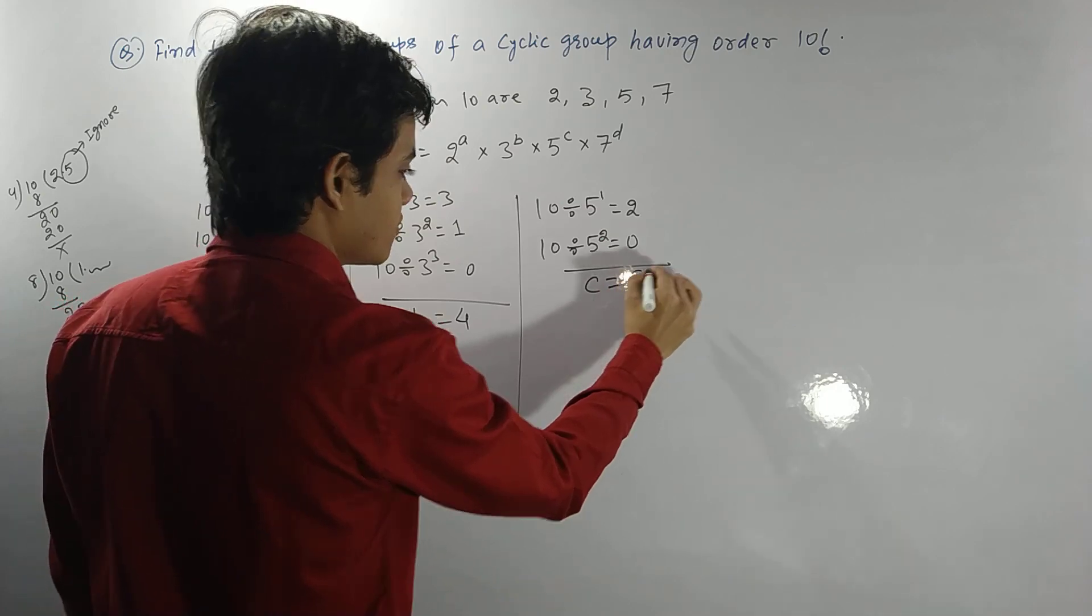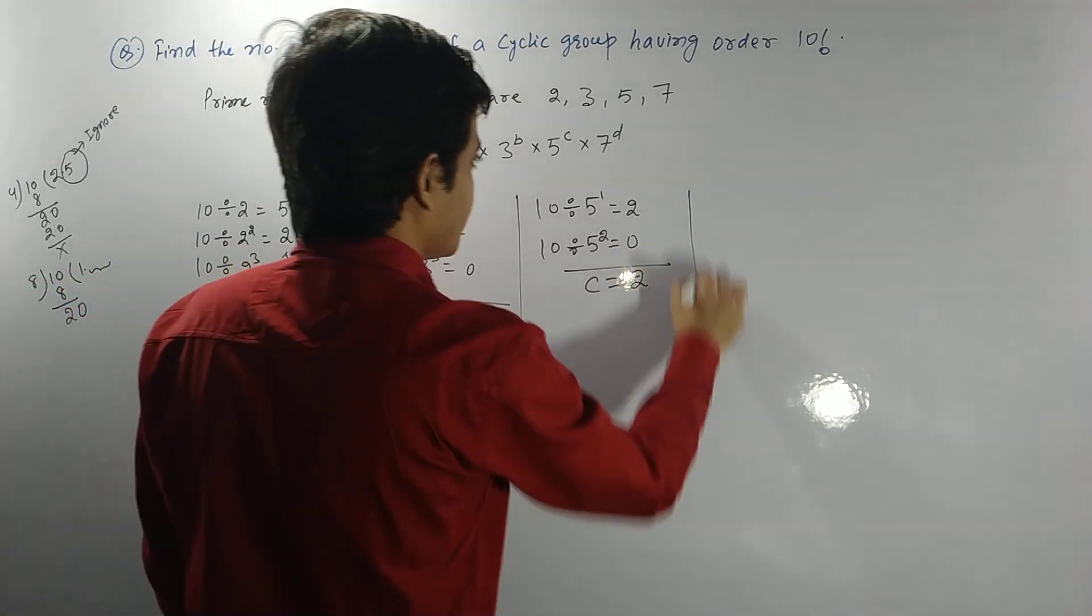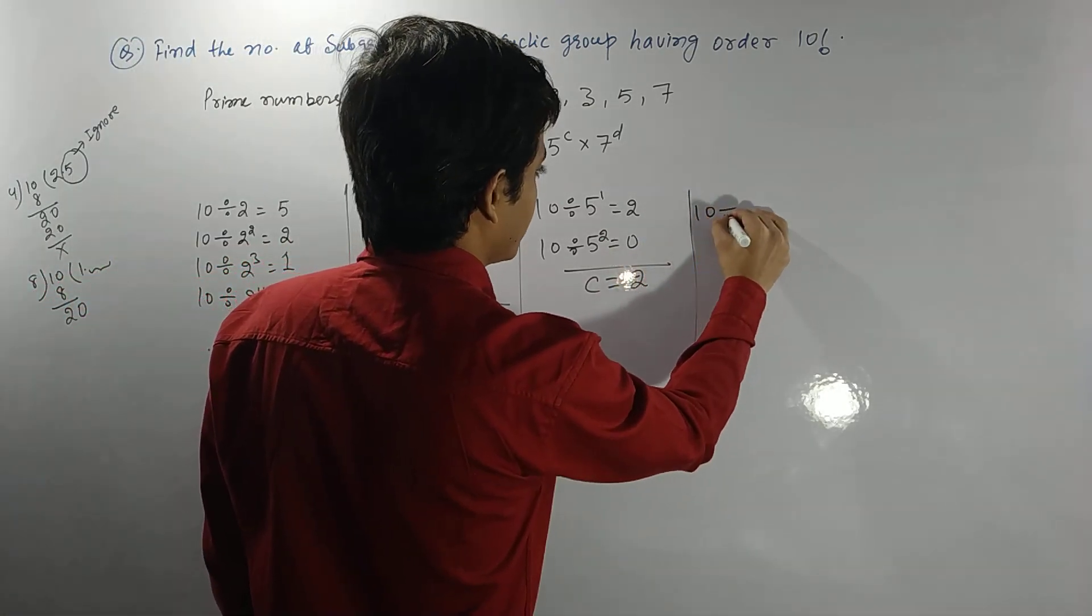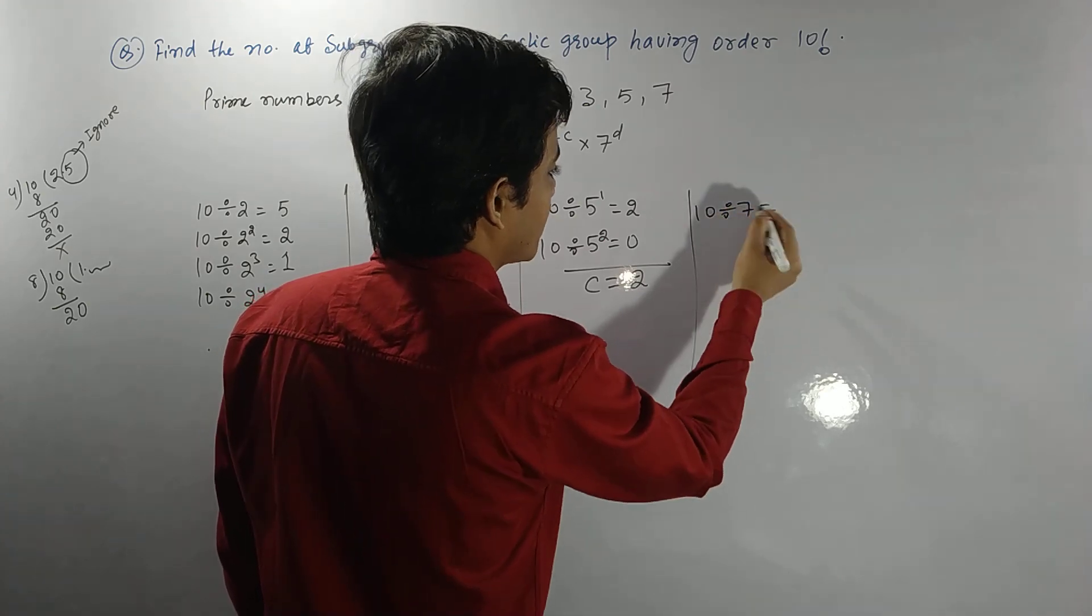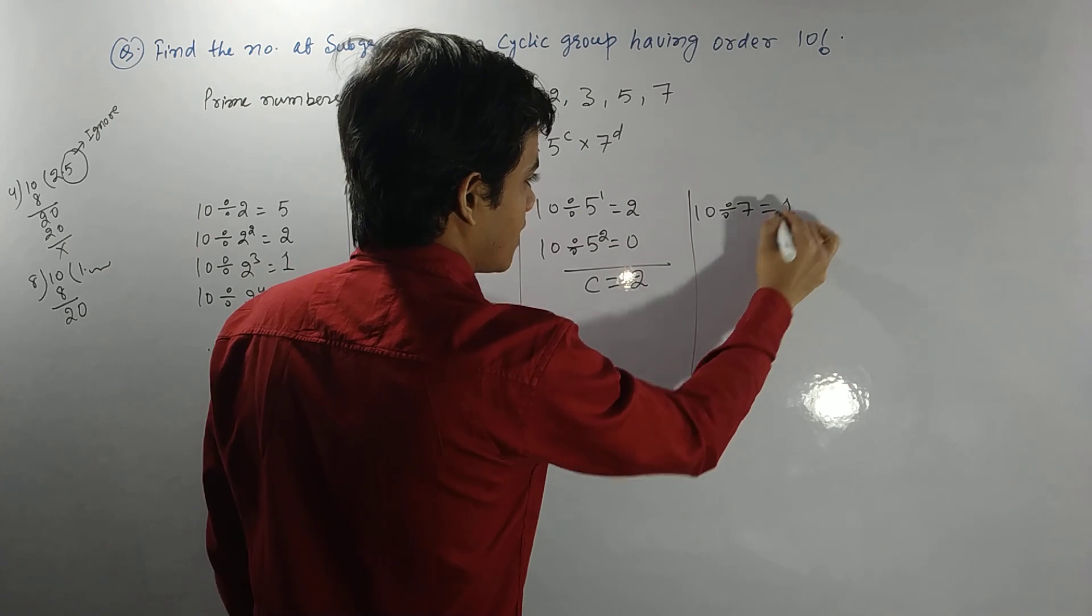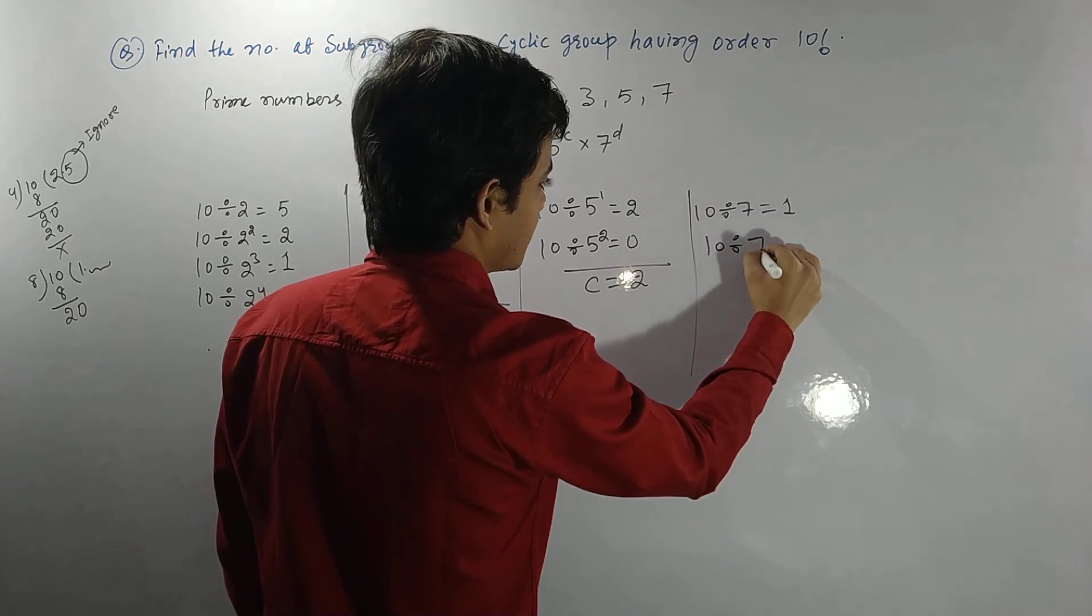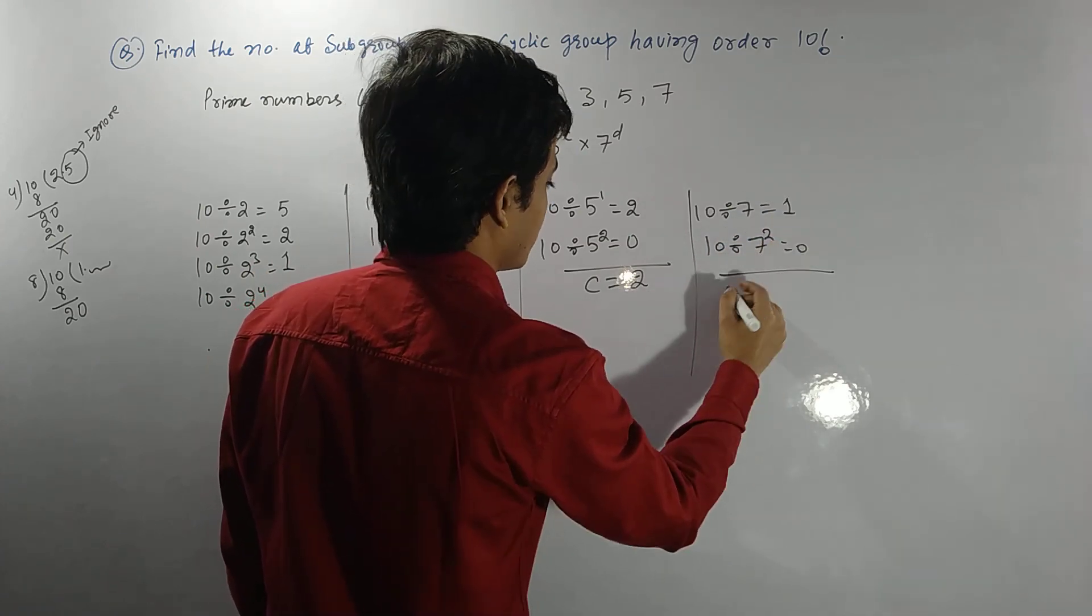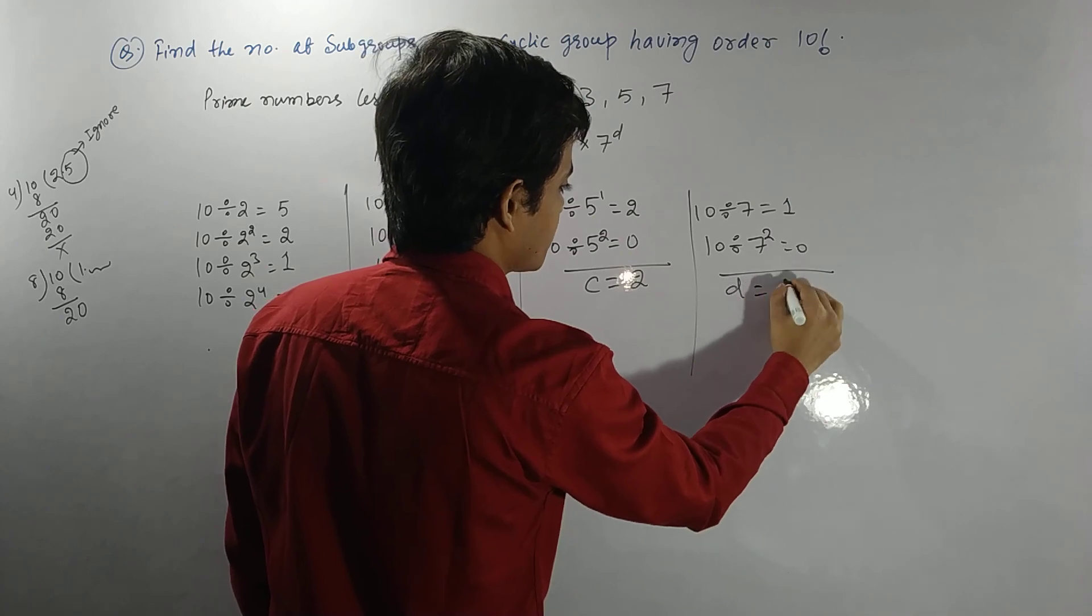And the last one is 10 divided by 7, which gives 1. And 10 divided by 7 squared is 0. So certainly d is 1 plus 0, which is 1. So this is our a, b, c, and d.